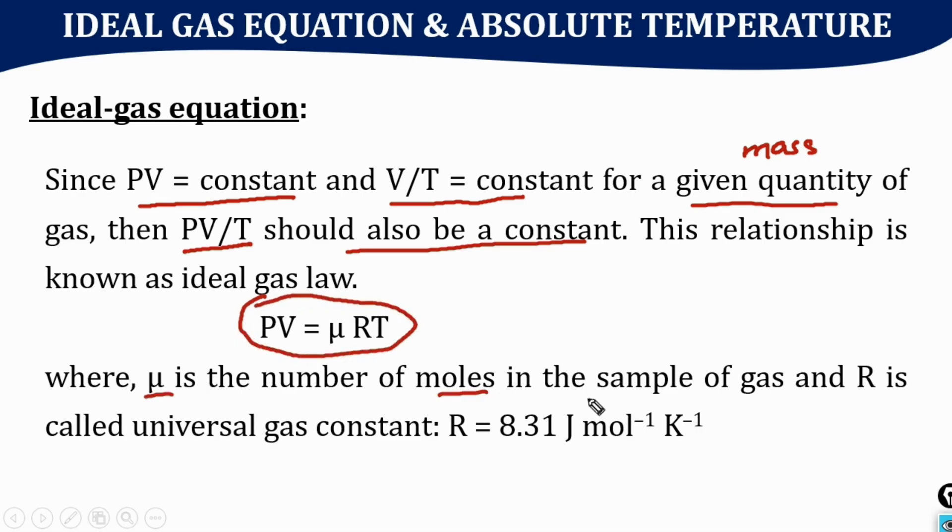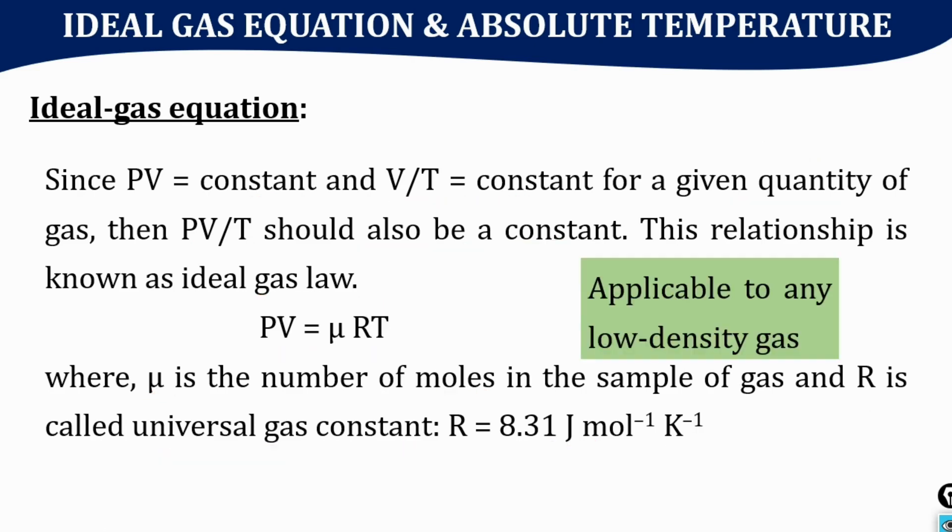Here, the value R equals 8.31 joules per mole per Kelvin, and it is known as the universal gas constant. This equation is applicable to any gas which is at low density.